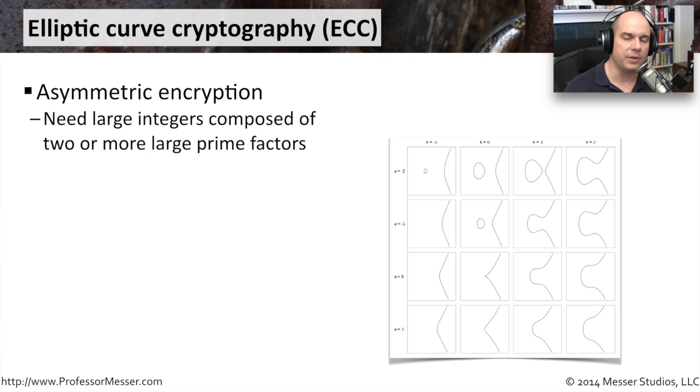As you recall, with asymmetric encryption, we have to have a lot of mathematics that go into this. It takes up a lot of resources, a lot of CPU cycles. And that's because with asymmetric encryption, we have to calculate these very large integers that also happen to be prime numbers. And to be able to figure that out requires a whole lot of calculations.